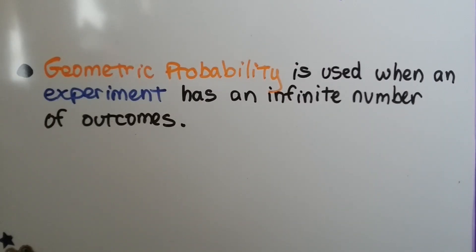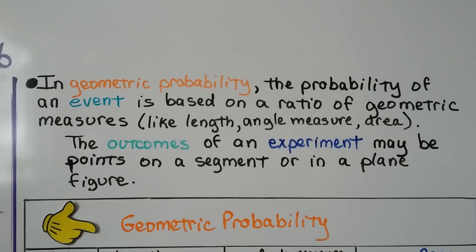Geometric probability is used when an experiment has an infinite number of outcomes. In geometric probability, the probability of an event is based on a ratio of geometric measures like length, angle measure, or area. The outcomes of an experiment may be points on a segment or in a plane figure.